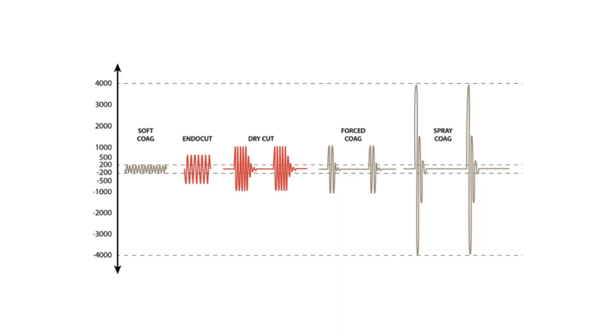When it comes to cut, endocut has a voltage of more than 200 volts without interruption. And with dry cut, you do have some interruption because there is a lot more coagulation compared to endocut.